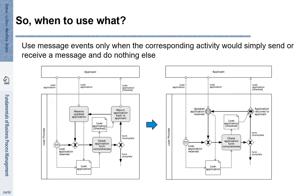We suggest that it is best to use events for receipts, because if we receive information, we do not have control over this — so we are passive. If we are actively sending information, this is more appropriately shown with an activity. This means instead of the intermediate event with the black envelope, we suggest using the activity symbol. For the receipt, we suggest showing the intermediate event symbol with the white envelope. So it is not about activity versus event, but about whether we are active or passive in the process.